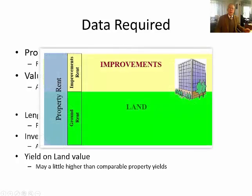How do we get the yield on land values? Ideally, we'd want comparable instances of ground rents — places where the land has been sold or is reliably valued and a ground rent is available. You may not find that very easy to come across, so there's another way. Simply look at the property yields from your particular market. Property yields appear to be somewhere in the vicinity of — let's say — 10%. So if the entire property is running on a yield of 10%, what should the ground yield be — the yield on the ground rent relative to the land value?